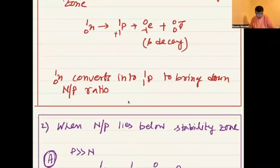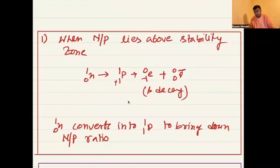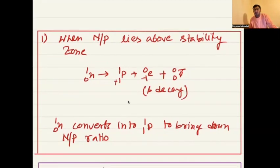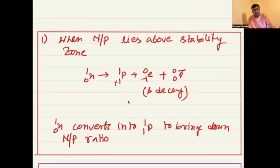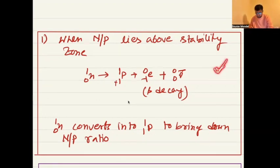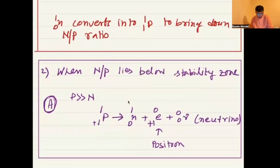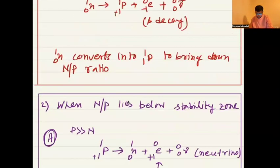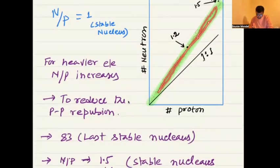The neutron decays and the process releases energy. When the N/P ratio lies below the stability zone, a different process occurs. The proton converts, and this leads to positron decay — a proton is converted into a neutron.